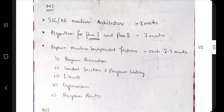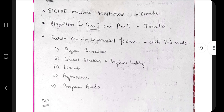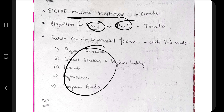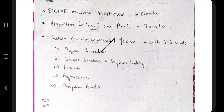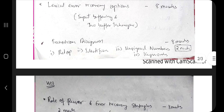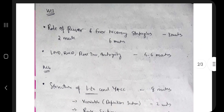Quick recap: machine architecture — half an hour; pass one and pass two written five times — one hour; the small topics — 10 minutes. That's one hour 40 minutes so far. The seven phases will take another 20 minutes — two hours total. Lexical recovery and transition diagram — around 20 more minutes. Let's take it as two hours 30 minutes in total for modules one and two.